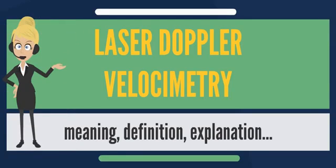Laser Doppler Velocimetry (LDV), also known as Laser Doppler Anemometry (LDA), is the technique of using the Doppler shift in a laser beam to measure the velocity in transparent or semi-transparent fluid flows, or the linear or vibratory motion of opaque, reflecting surfaces. The measurement with LDA is absolute, linear with velocity, and requires no pre-calibration.